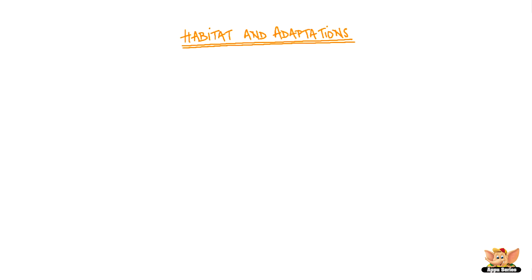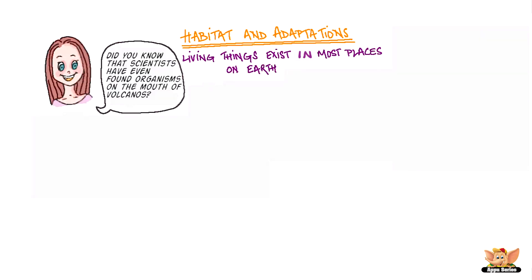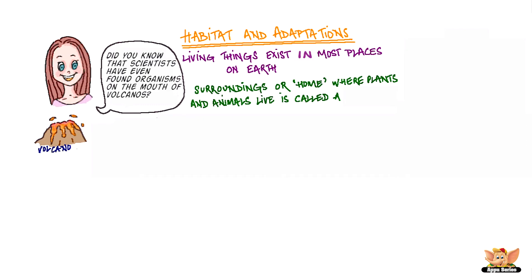Habitat and Adaptations. Living things exist in most places on earth. Did you know that scientists have even found organisms on the mouth of volcanoes? The surroundings or home where plants and animals live is called a habitat.